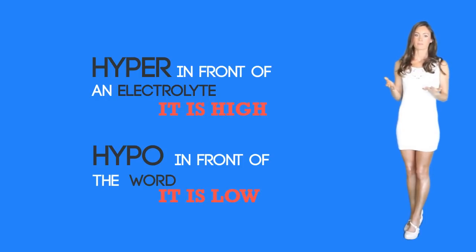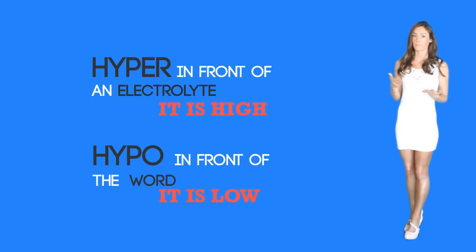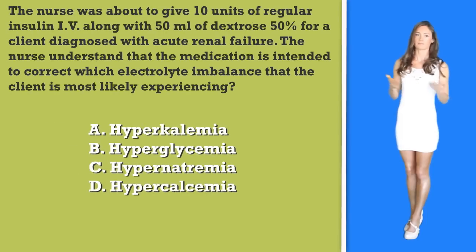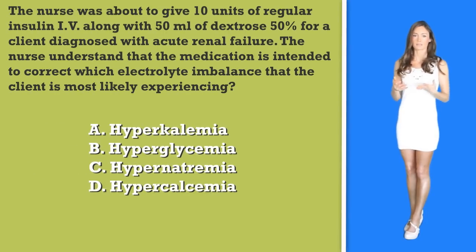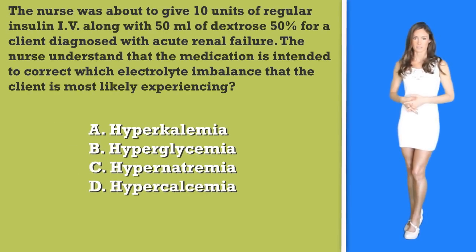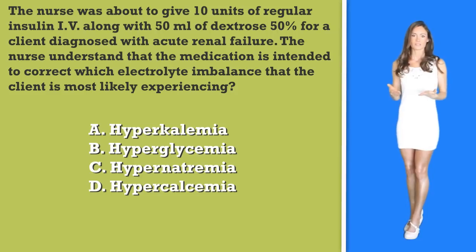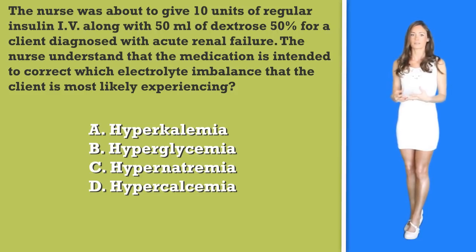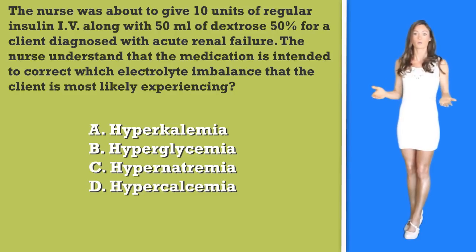And if they have a potassium level of 5.5, they are said to be hyperkalemic, because normal is between 3.5 to 5.5. These levels are important to maintain proper homeostasis. Since the question is not giving us the exact values, it is asking us to recognize why these medications are normally given.